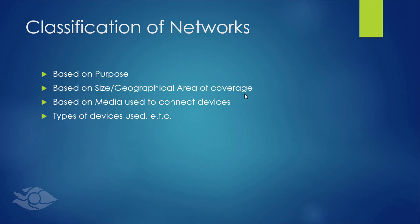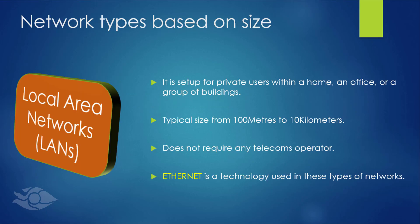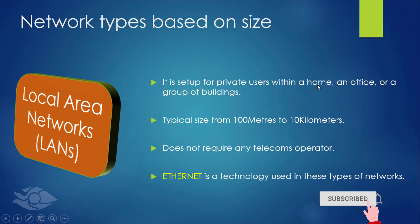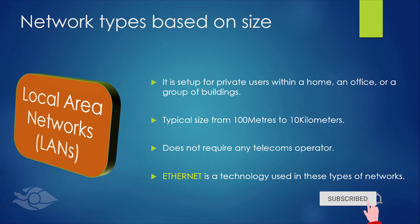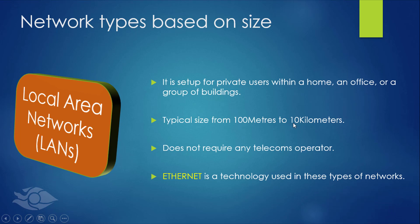The first type of network we'll talk about is the local area network. Just like the name implies, it is one that is set up locally for private users — within a home, an office, or a group of buildings. This is usually managed by an individual or private organization. In terms of size, they typically range from 100 meters to 10 kilometers in distance. They do not require any telecoms operator in order to function, as they are small in size.